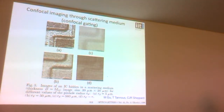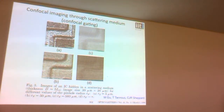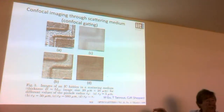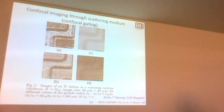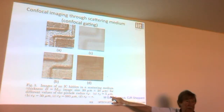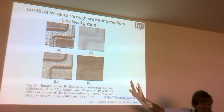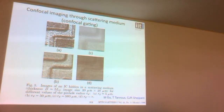The optical sectioning is sometimes called confocal gating — a term often used in the OCT community, which also uses the terms coherence gating and angular gating. These are from work done when I was in Sydney, after Oxford — where I worked for 14 years. This work by my postdoc Minggu shows how you can image through a scattering medium with the confocal microscope.